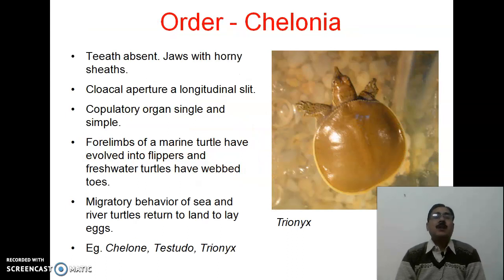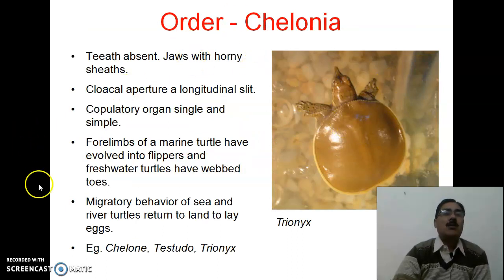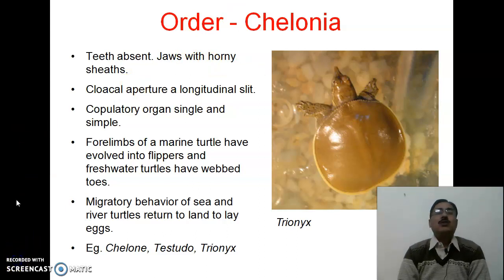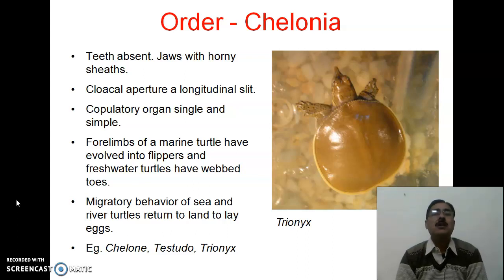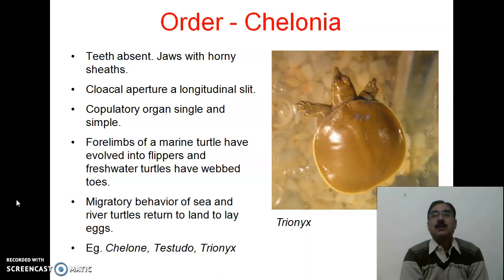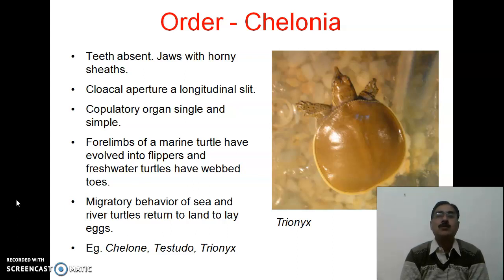Teeth are absent in chelonians (kachhuo ke andar dant nahi paye jate). Instead, the jaws have a horny sheath (horny sheet) with which they can cut through food very efficiently. They have a cloacal aperture that is a longitudinal slit. The copulatory organ is single and simple — its structure is not complex.